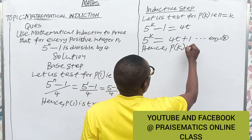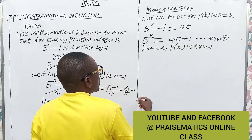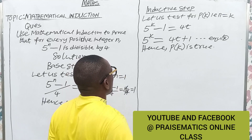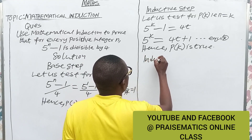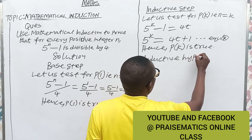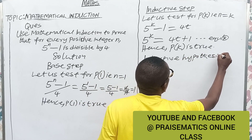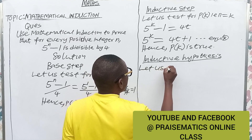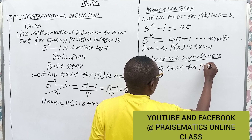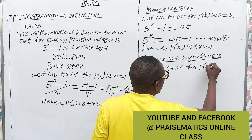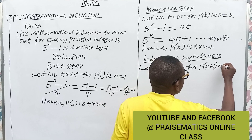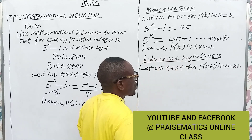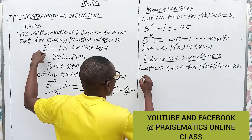Hence P(k) is true. Now let us look at Step 3, the inductive hypothesis. We test for P(k+1), that is n equals k plus 1. From the equation, wherever we see n we replace it with k plus 1, so we have 5 raised to the power k plus 1 minus 1.